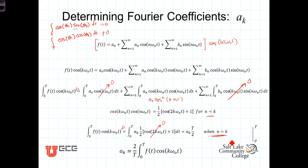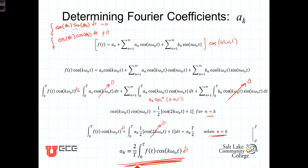We can solve for a_k by multiplying both sides of this equation by two and dividing by T. We get that a_k equals two over T times the integral of f(t) cosine k omega-naught t dt. This becomes the formula for calculating the coefficients associated with the cosine terms in our Fourier series. We'll be using this formula to calculate the coefficients a_k — the coefficients associated with the cosine terms in our series expansion.